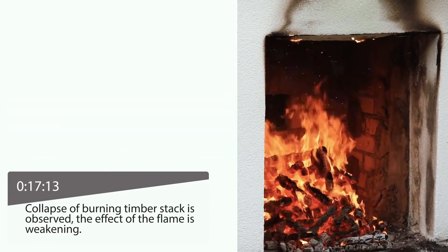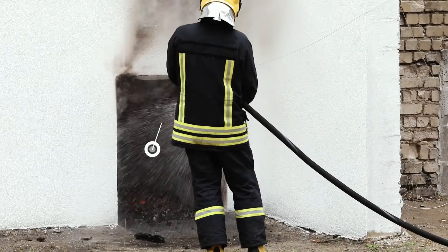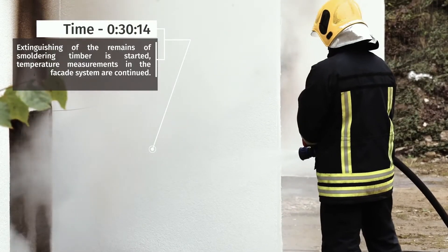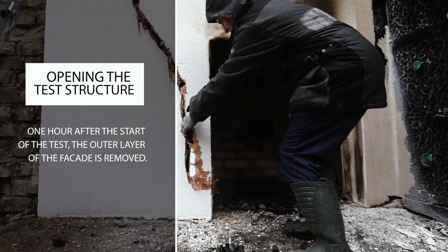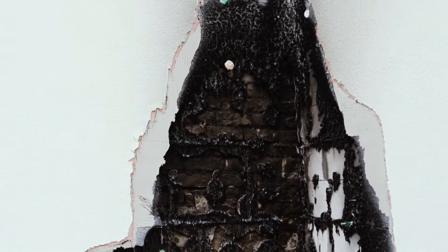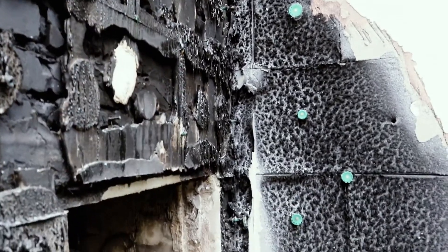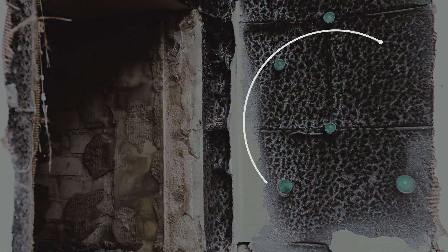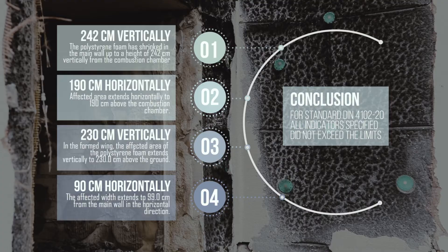After 17 minutes, the collapse of the timber stack is observed, causing the temperature to drop. After 30 minutes, extinguishing of the timber remains is started. One hour after the start of the test, the outer layer of the facade is removed. It is found that the polystyrene foam has shrunk in the main wall up to a height of 242 cm vertically from the combustion chamber, while horizontally the affected area extends to 190 cm. In the formed wing, the affected area extends vertically to 230 cm from the ground and horizontally to 90 cm from the main wall.